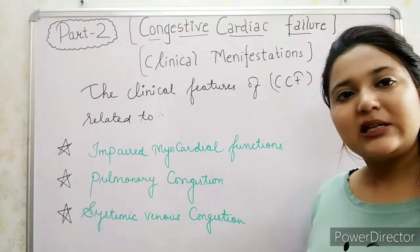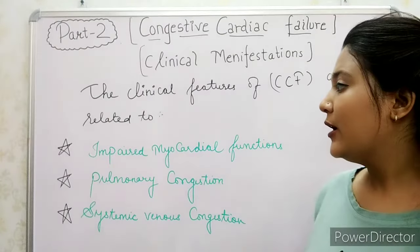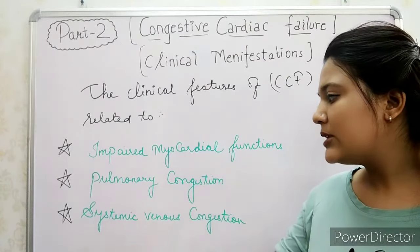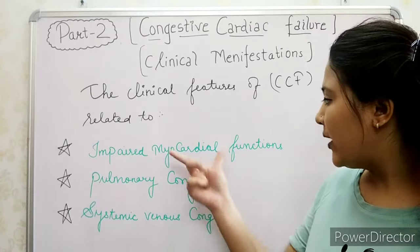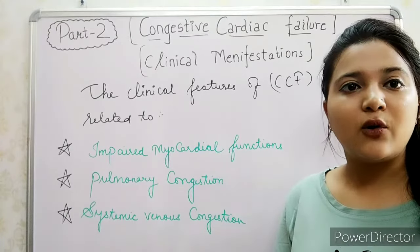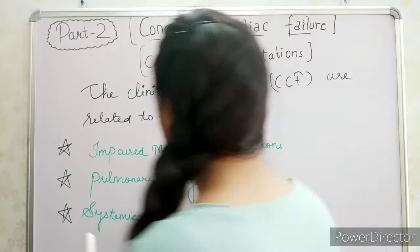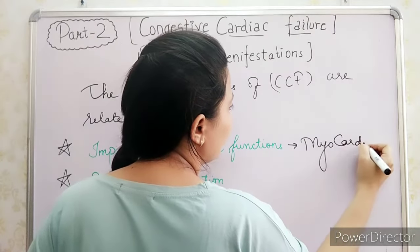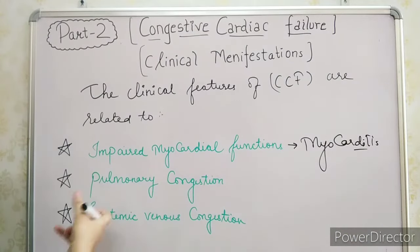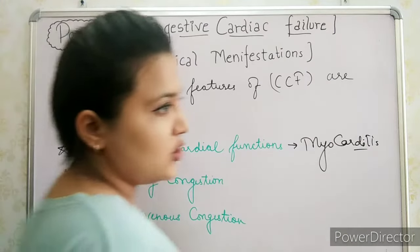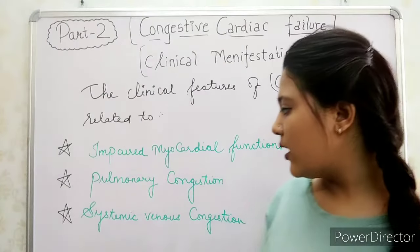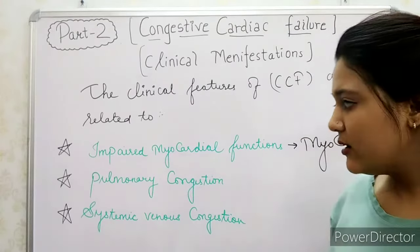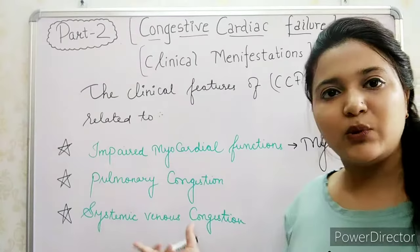If we talk about clinical manifestations, there are three main categories which show features. First is impaired myocardial function, second is pulmonary congestion, and the last one is systemic venous congestion. When cardiac output is decreased, the venous return pressure will increase, which leads to pulmonary congestion and systemic venous congestion.